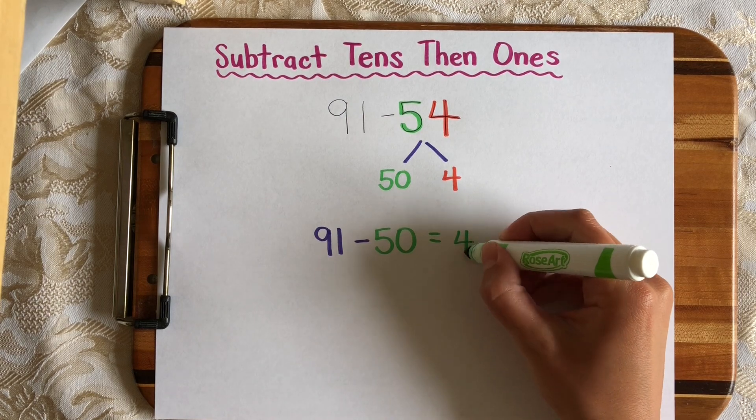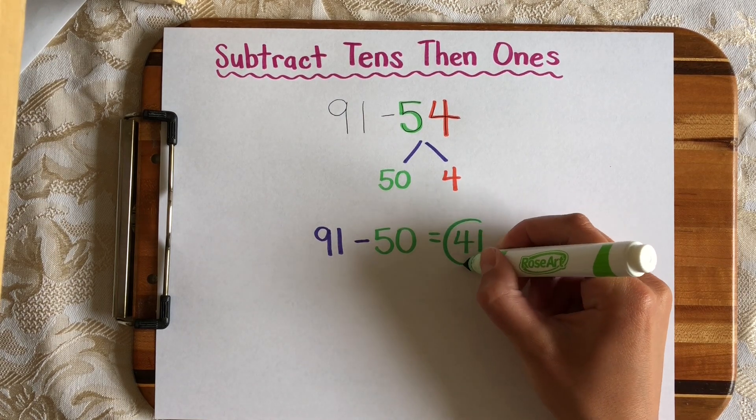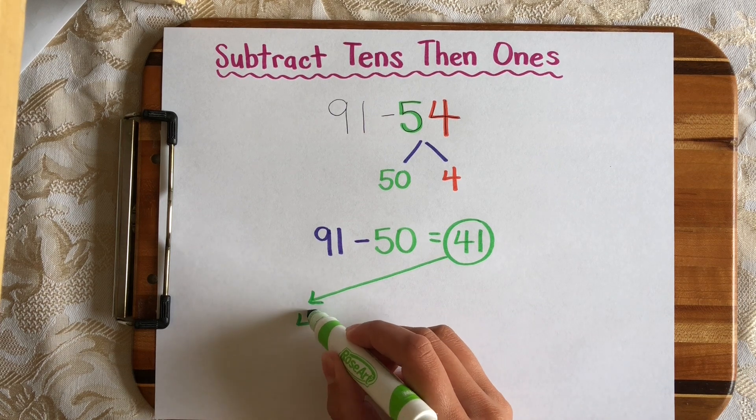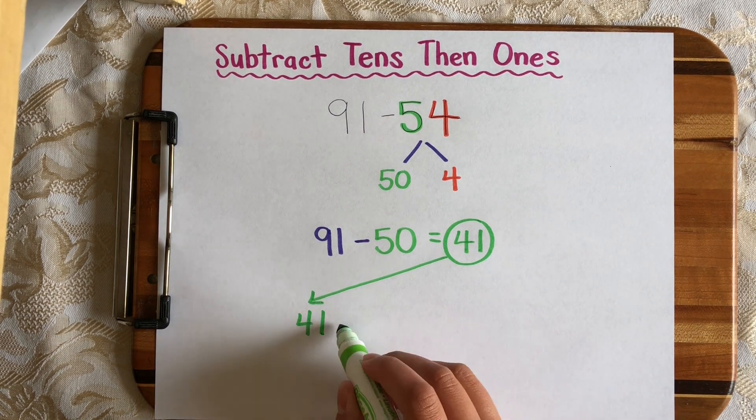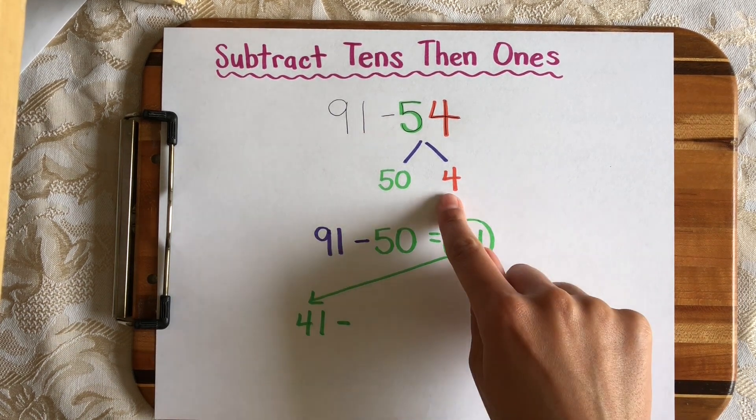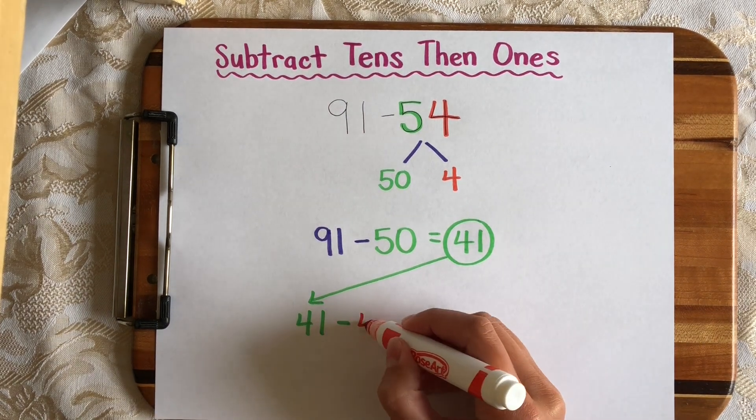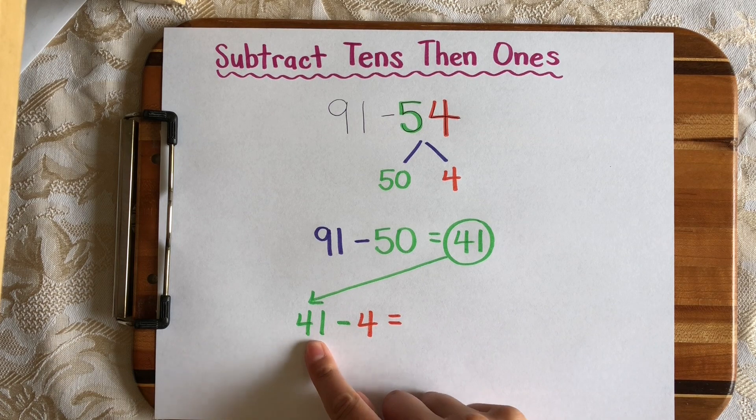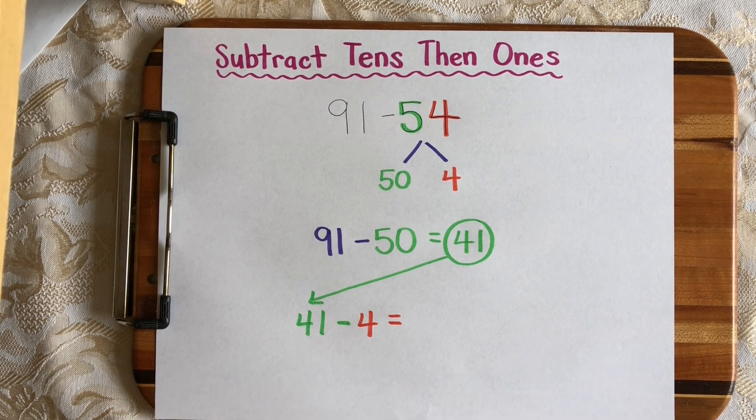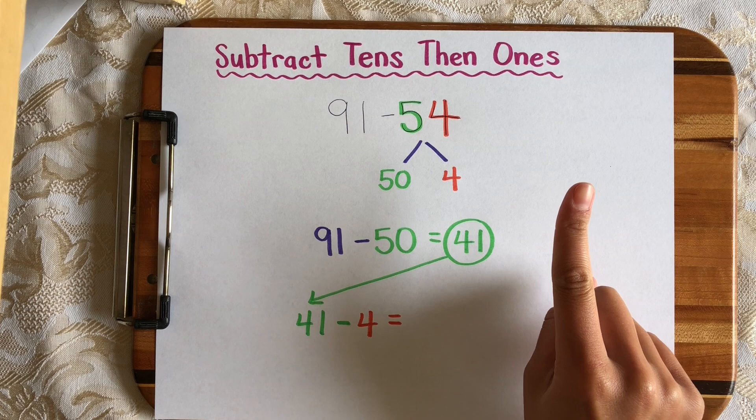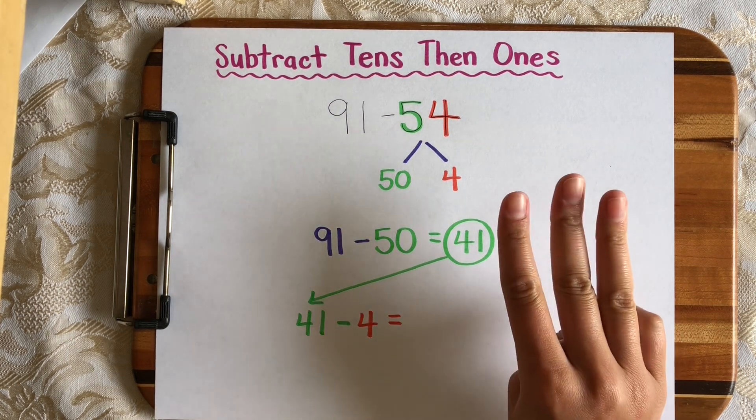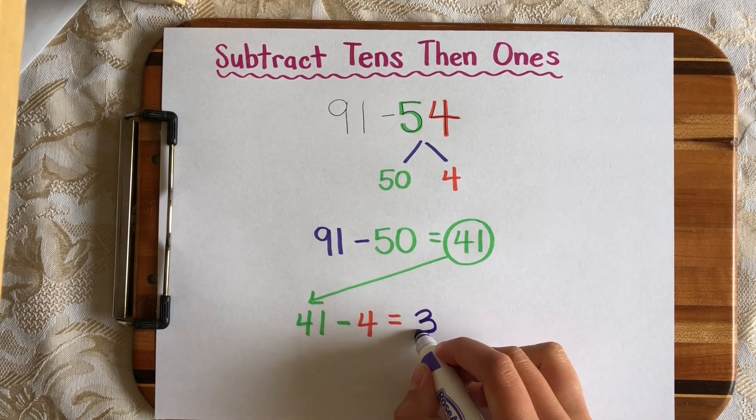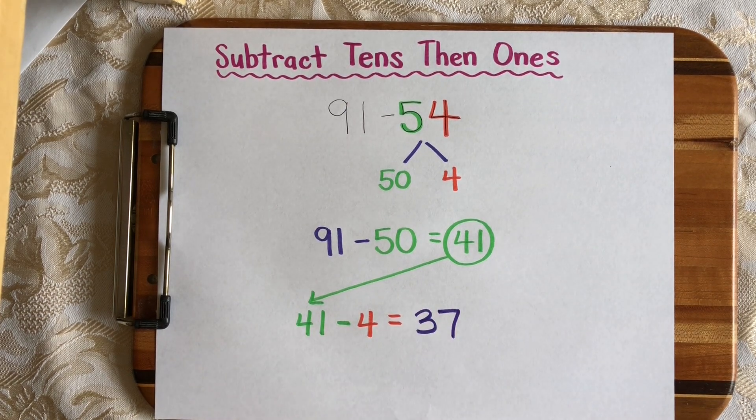So once we do that, we get to 41. Now I'm going to use this difference here, this new number, write it over here, and I'm going to subtract the 1s from 54, which I haven't done yet. And that will give me my difference. So I put 41 into my brain, and I count backwards 41, 40, 39, 38, 37. So the difference is 37.